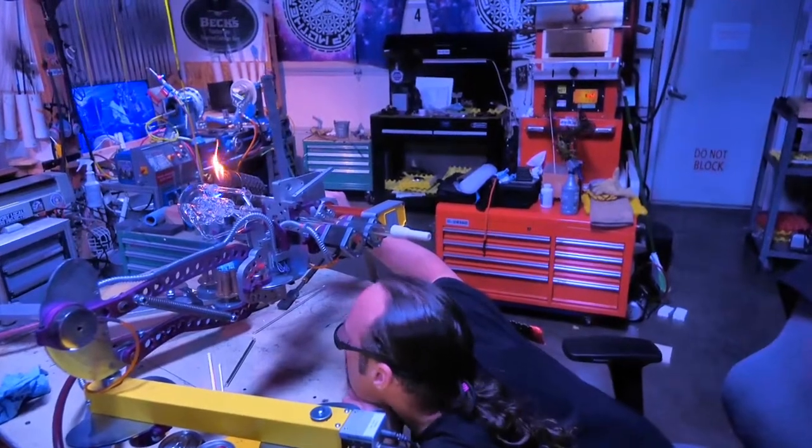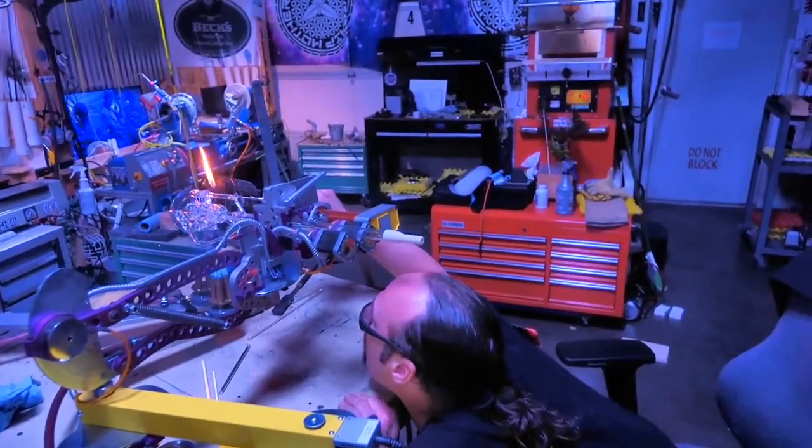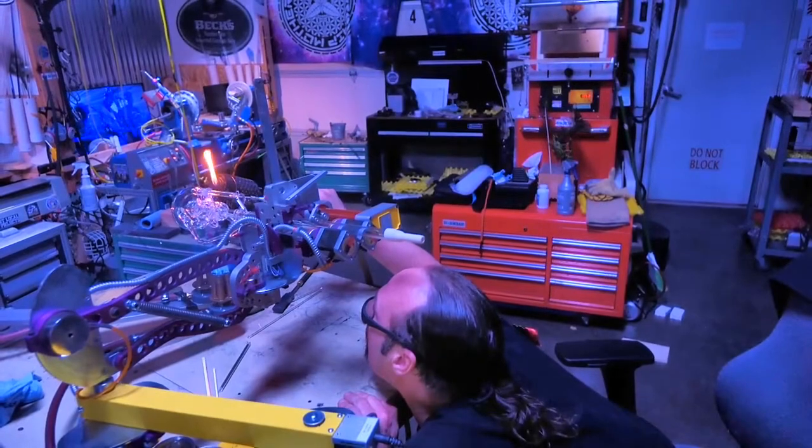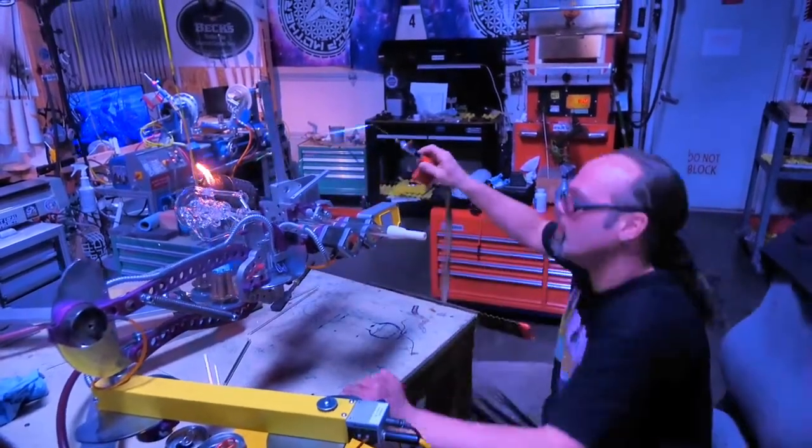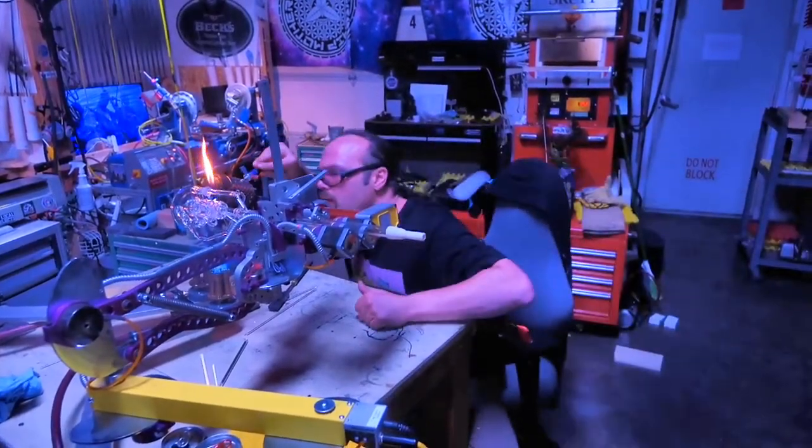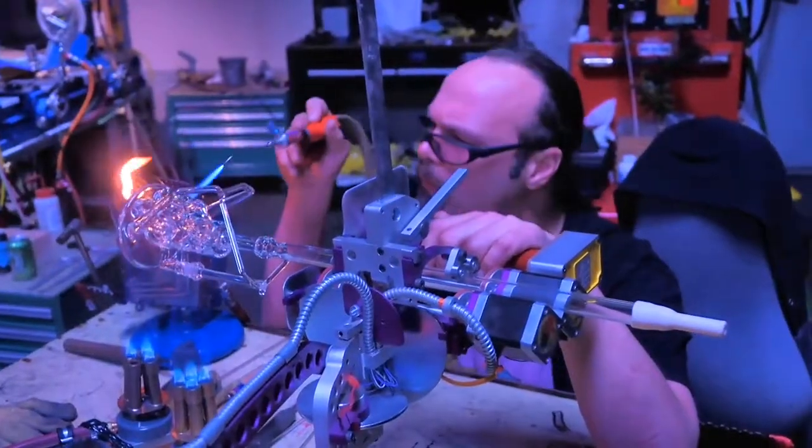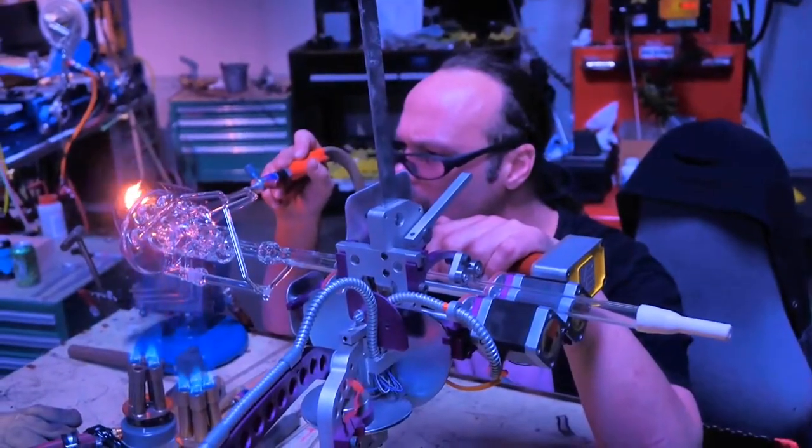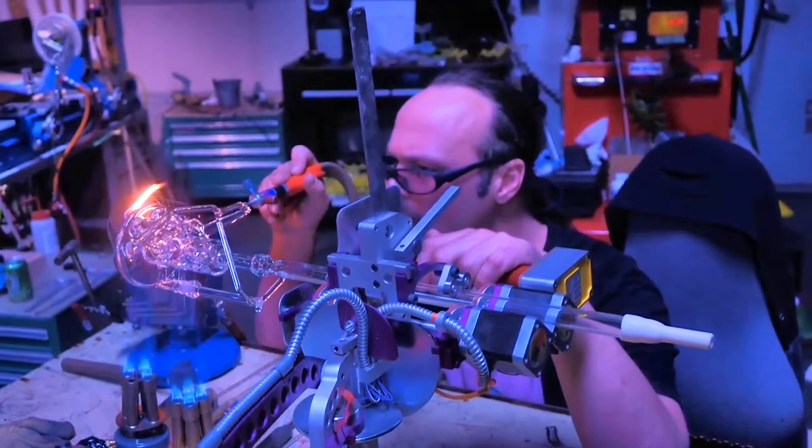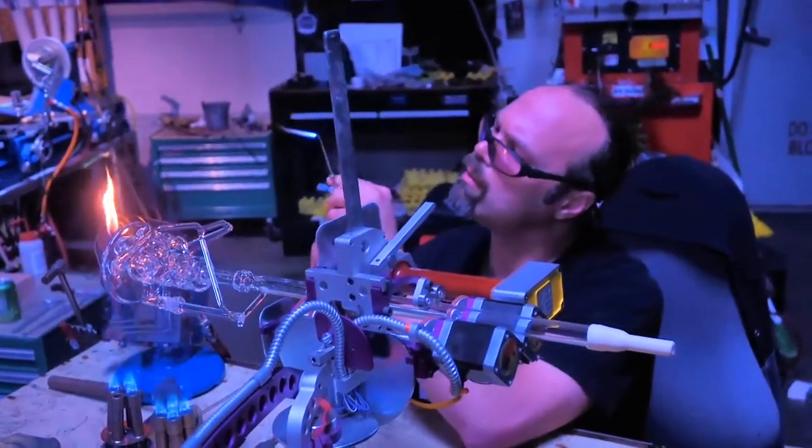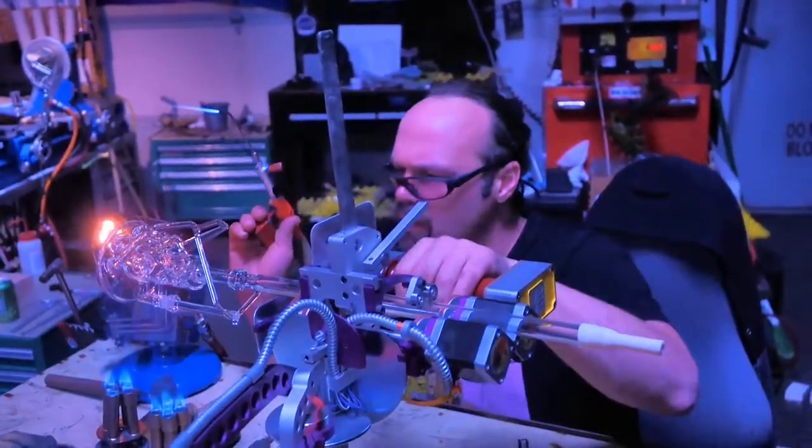He can even start perfecting the weld while it's on the Bunsen. Little bit by little bit, he carefully perfects the weld using the hand torch.